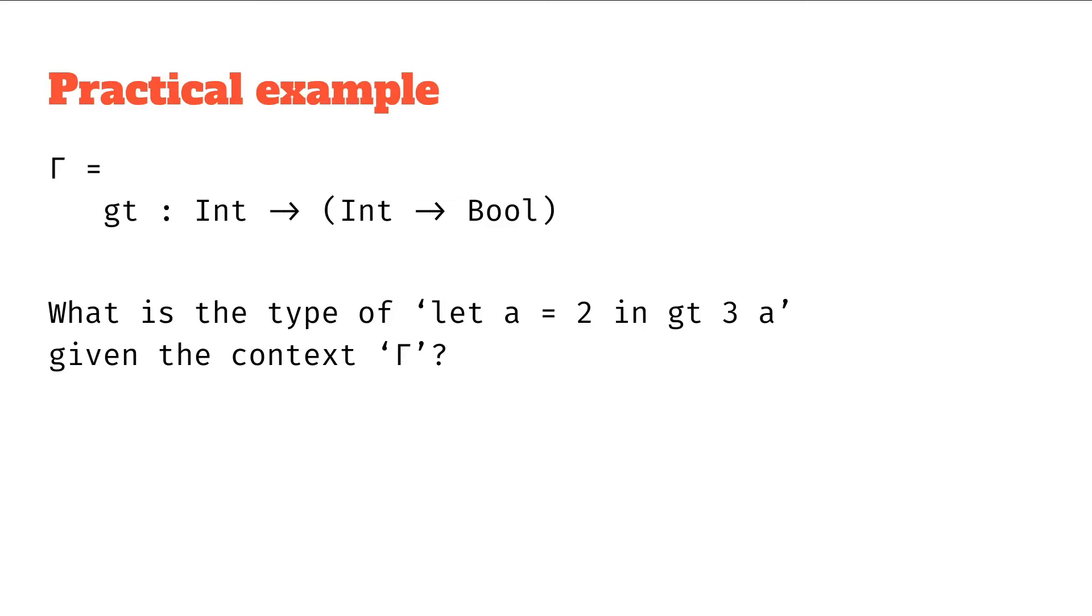So again, let's write this out in symbols where we're saying from the context gamma it follows that let a equals 2 in gt 3 a has what type.